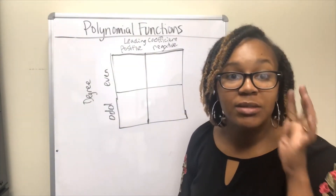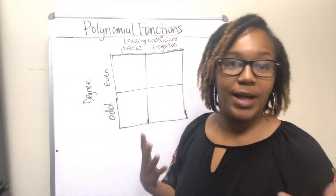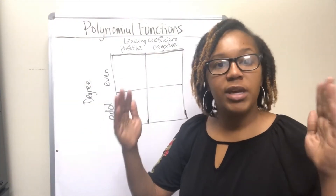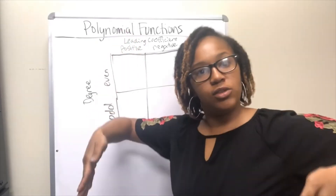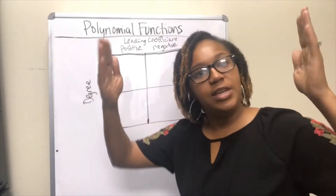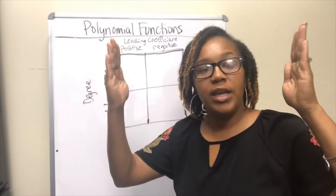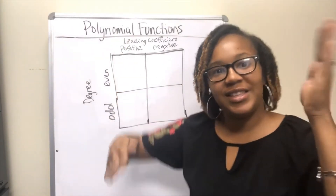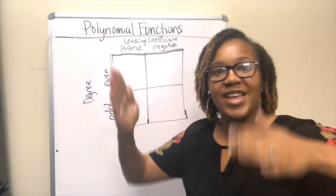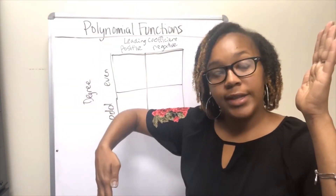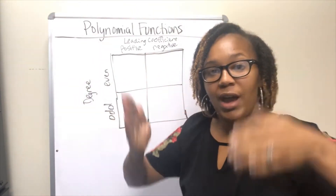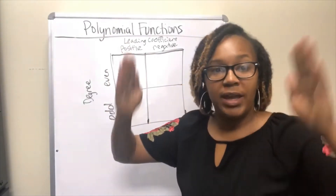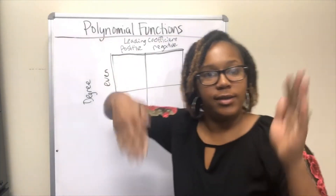I created some little dances to help remember end behavior. If it's even, both ends are doing the same thing — my even dance looks like both hands going the same direction. If it's odd, my ends are doing the opposite — one side going up, one side going down. That's the even behavior dance versus the odd dance.